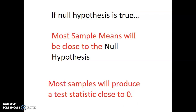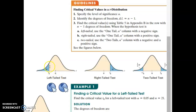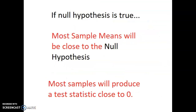So if we get a test statistic that is really far away from zero — really far into the tail of the distribution on either side — then there are one of two conclusions: either we just have a very unusual sample, or our null hypothesis is not true. We're always going to go with the conclusion that our null hypothesis is not true, and reject it if our test statistic is far out in the tails and not close to zero.